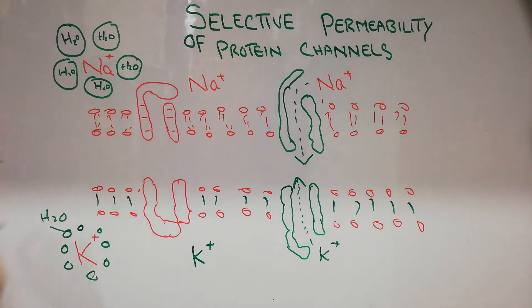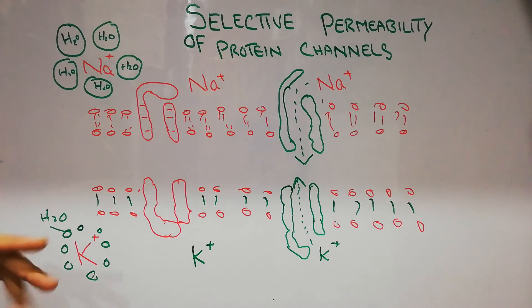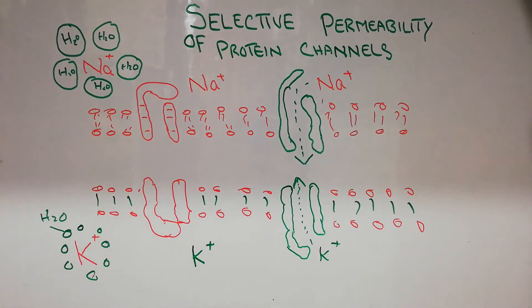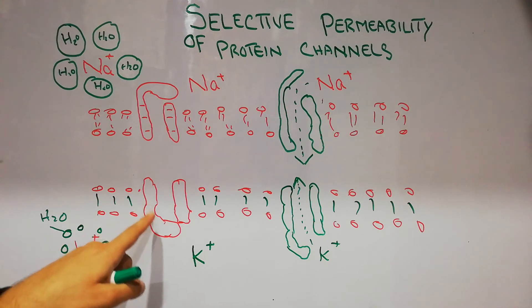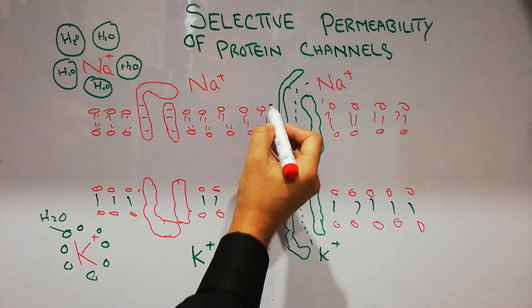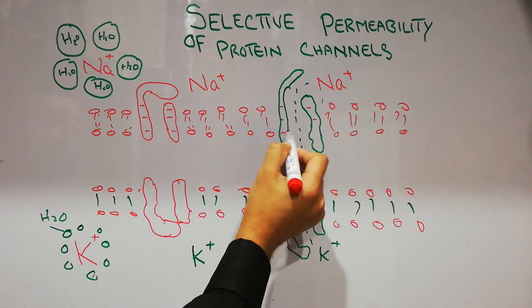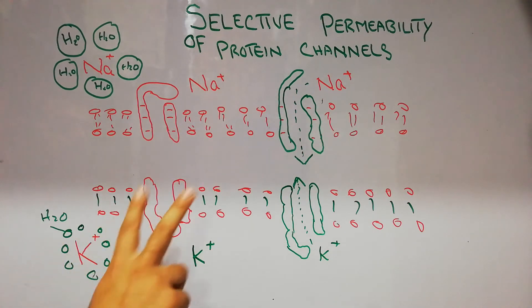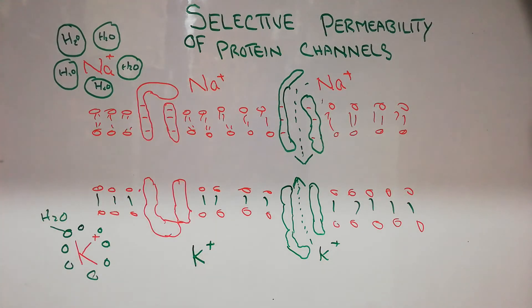Normally, the shape, structure, diameter, and charge of the channel will decide which type of ions are allowed to pass through it. In the case of the sodium channel, it is slightly bigger in size, while the potassium channel is slightly smaller in size. The sodium channel is very much negatively charged, more on the inside of the cell membrane, while the potassium channel is not negatively charged. The sodium channel is gated on the outside, while the potassium channel is mostly gated on the inside of the cell membrane.